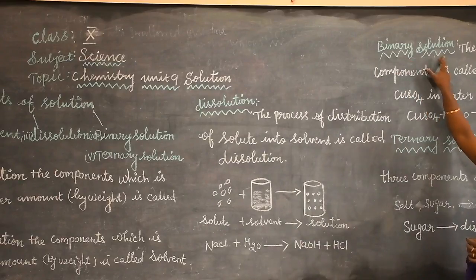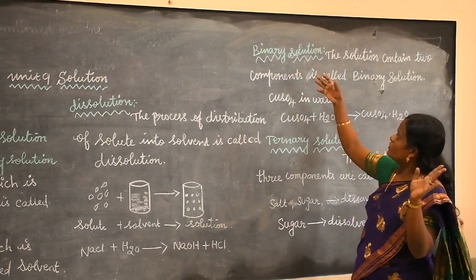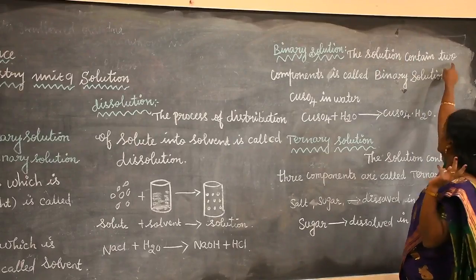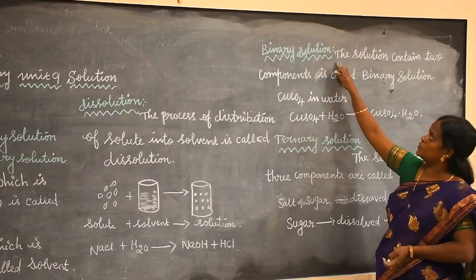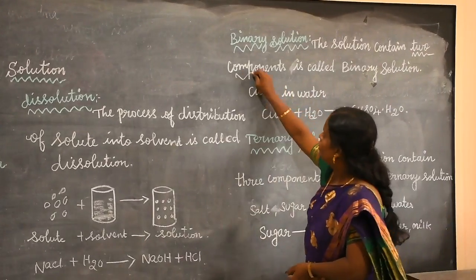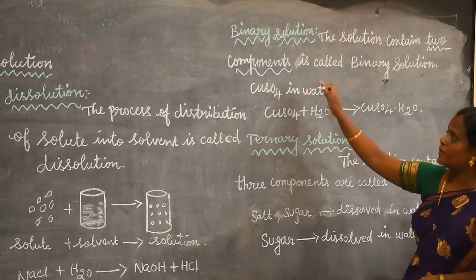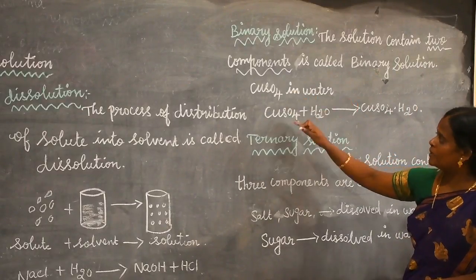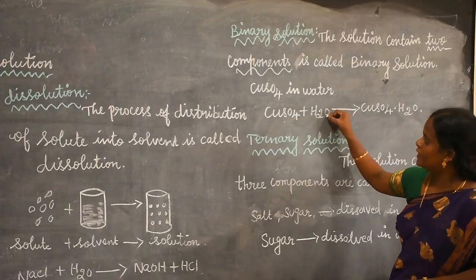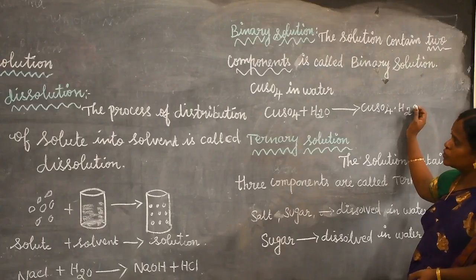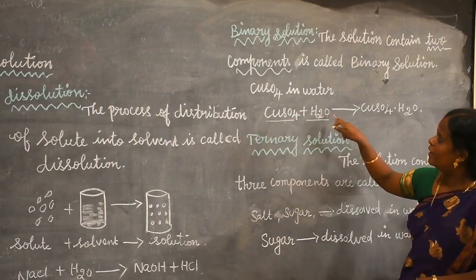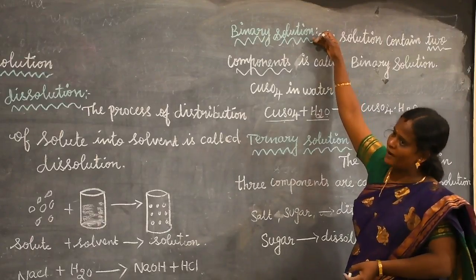Next, let us see binary solutions. Binary means two. What is meant by binary solution? The solution that contains two components is called a binary solution. For example, copper sulfate in water. Copper sulfate reacts with water and forms copper sulfate monohydrate. Here, copper sulfate is a solute and water is a solvent, so copper sulfate monohydrate is the solution. Two components are present: copper sulfate and water. This is the example for binary solutions.